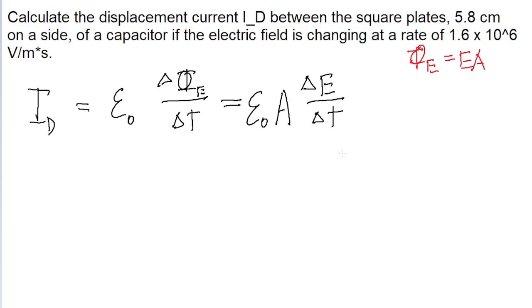Now this formula is entirely in terms of things we have, because we are given the rate of change of the electric field. So let's start plugging these things into a calculator. First off, epsilon naught, the electric constant, always has a value of 8.85 times 10 to the power of negative 12, with some crazy units, Coulomb squared per Newton meter squared, most people don't care about the units to that.